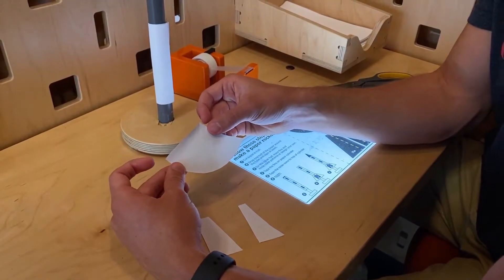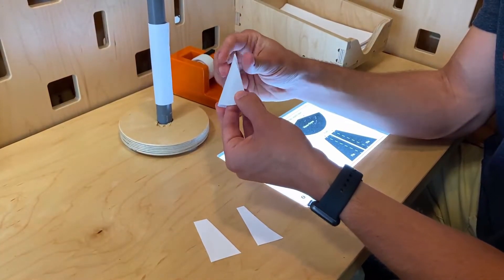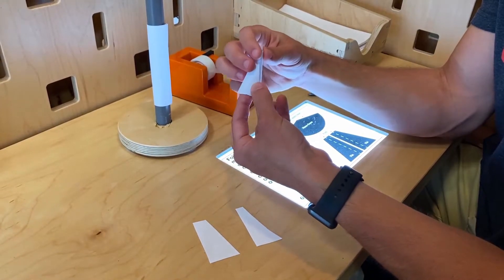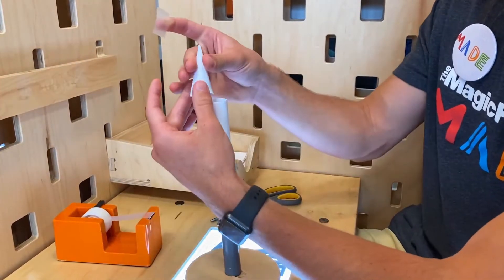Once you have your nose cone and fins cut out, fold the nose cone over and wrap around itself. Tape your nose cone shut and then tape it to the body of the rocket.